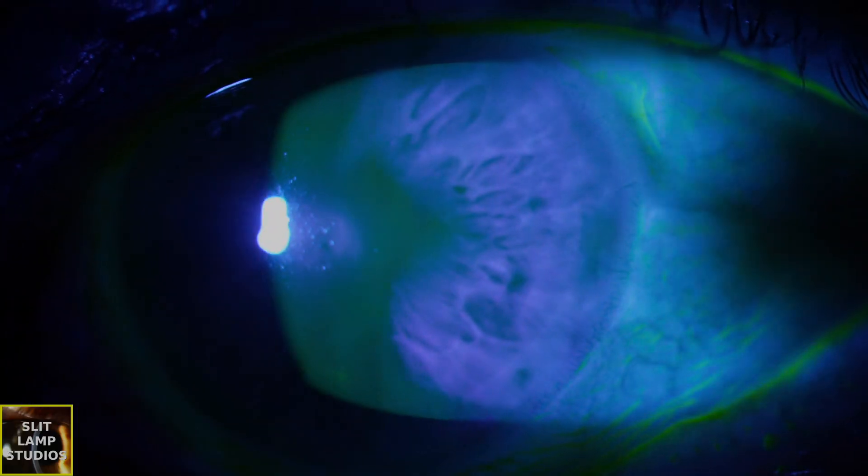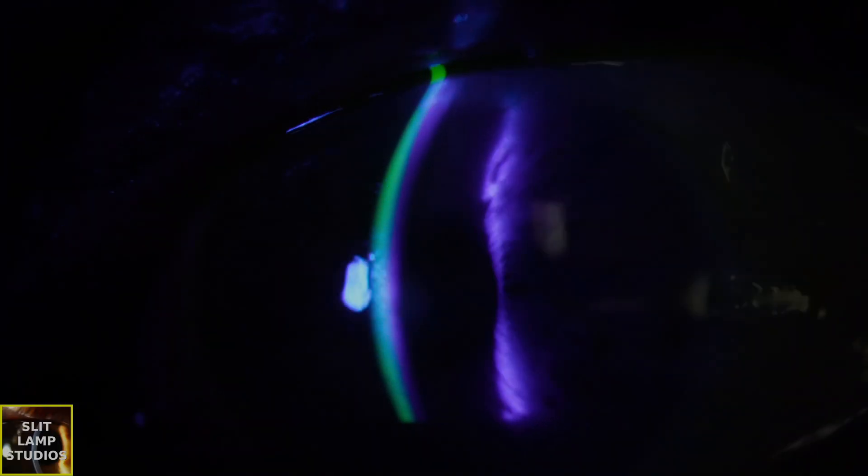But another way of doing that is by considering corneal cautery to reduce the ability of the blood vessels to deliver that exudate. But also, you can consider injecting mitomycin into the blood vessels too.